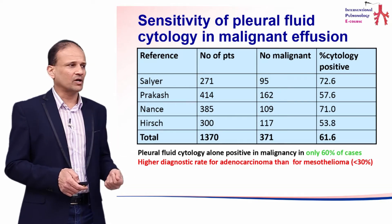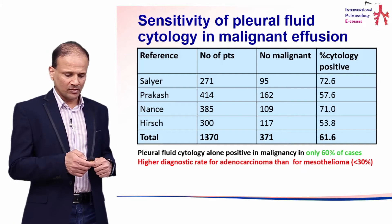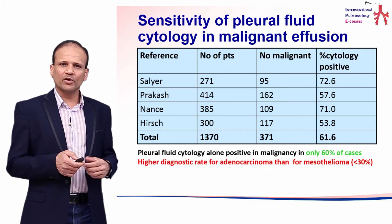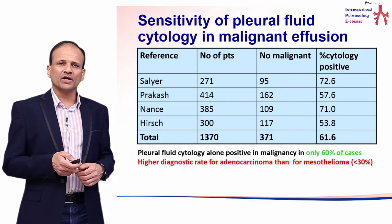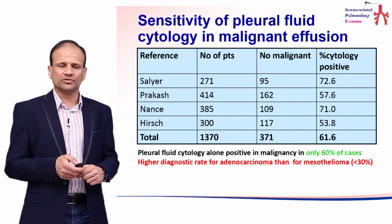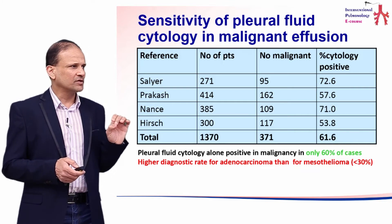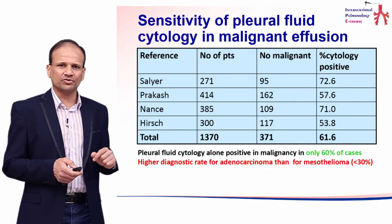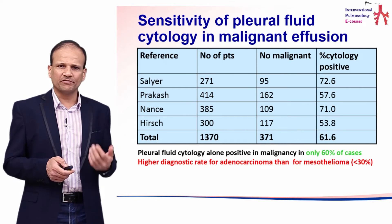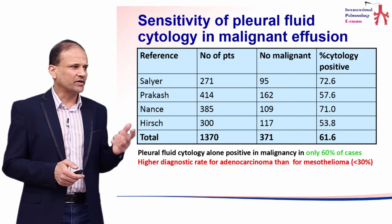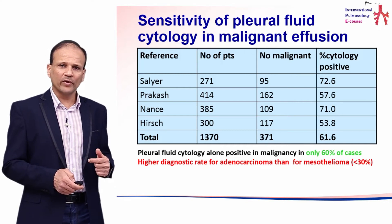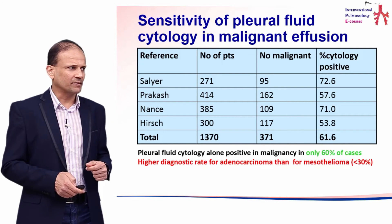In the past, what we have done is pleural fluid cytology. Pleural fluid cytology is a poor test overall, especially for malignancy but also for infections such as tuberculosis. In the very best studies, the diagnostic yield achieved is no more than 50 percent, and for malignancy such as mesothelioma it has been well below 30 percent, which is disappointing.